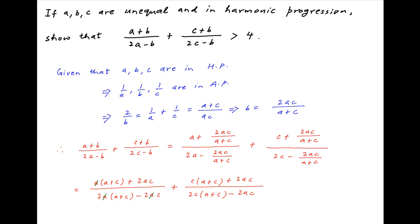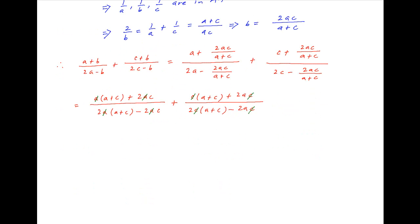In the first term, a cancels across the numerator and denominator, and in the second term, c cancels across the numerator and denominator. This expression is therefore equal to (a + 3c) / [2(a + c − c)] plus (3a + c) / [2(a + c − a)].